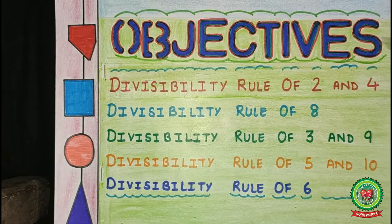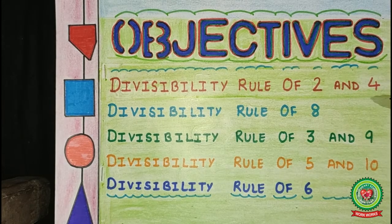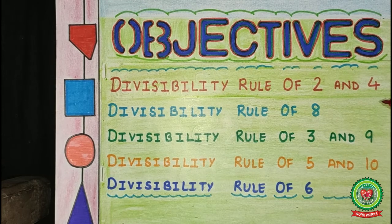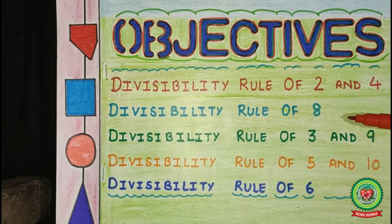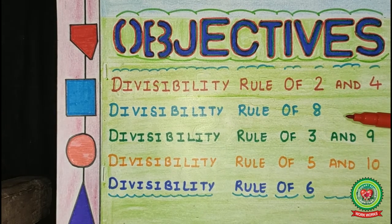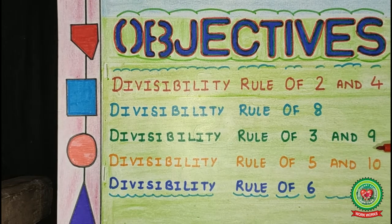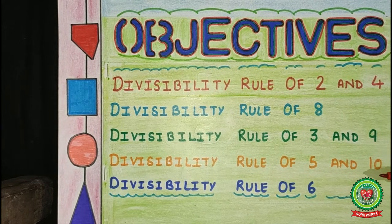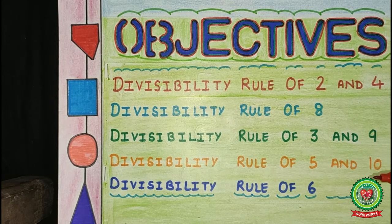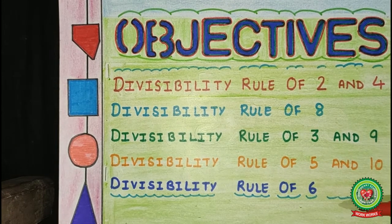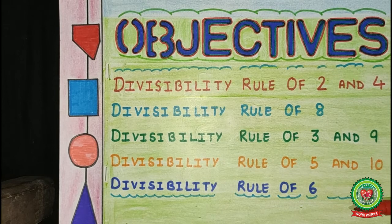The objectives of the topic are: divisibility rule of 2 and 4, divisibility rule of 8, divisibility rule of 3 and 9, divisibility rule of 5 and 10, and divisibility rule of 6.